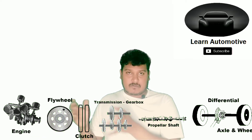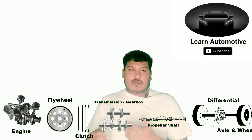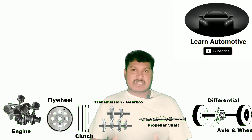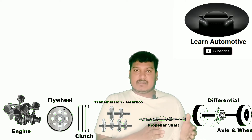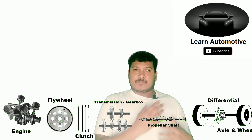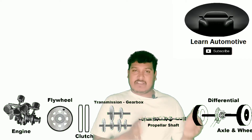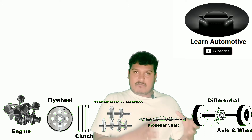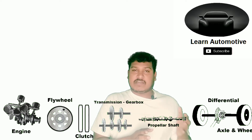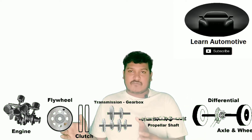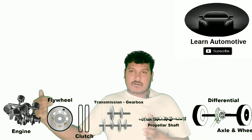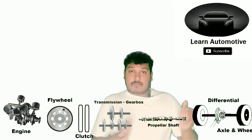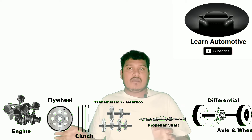Once the power comes from the engine to the transmission, the main shaft of the transmission has been connected to the propeller shaft. The propeller shaft is the exact term used at the system level — in the laboratory or in the plant — while in the market it is commonly called the drive shaft. This propeller shaft gets its motion from the main shaft of the transmission.